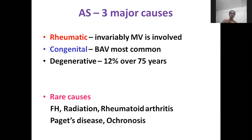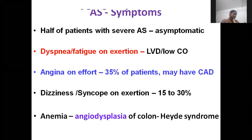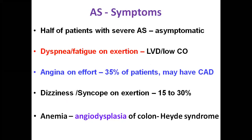Moving on to aortic stenosis — three major causes: rheumatic, where the mitral valve is invariably involved presenting in the third to fourth decade; congenital bicuspid aortic valve, the most common cause, presenting in the fifth to sixth decade; and degenerative, seen in 20 percent over 75 years, presenting in the seventh decade and beyond. Half of patients even with severe aortic stenosis may be asymptomatic. Symptoms include dyspnea and fatigue on exertion due to LV dysfunction and low cardiac output. Effort angina is seen in nearly one third of patients.